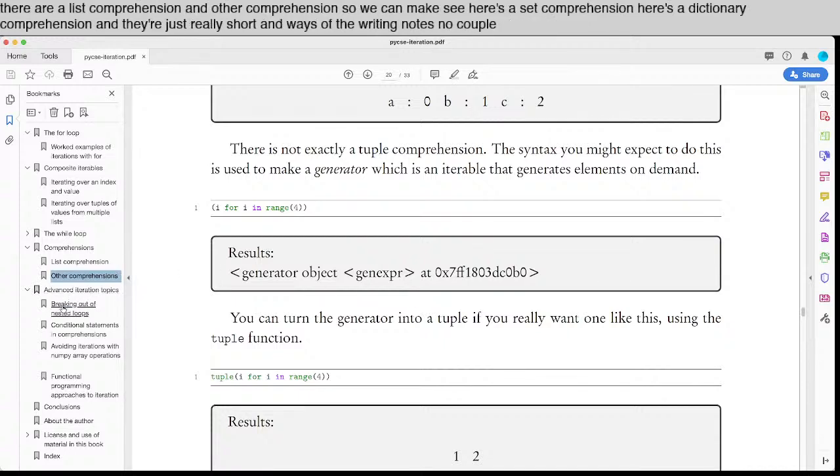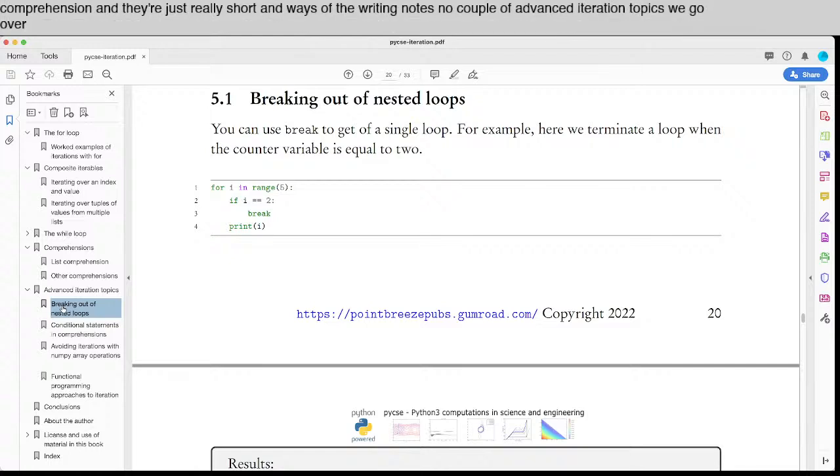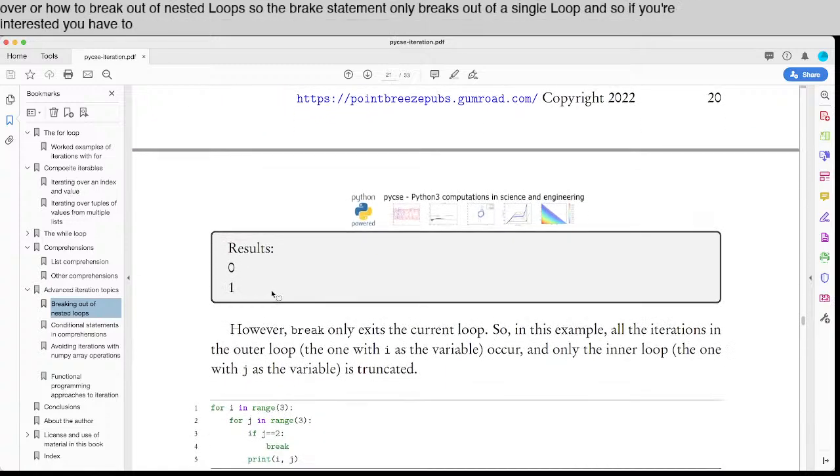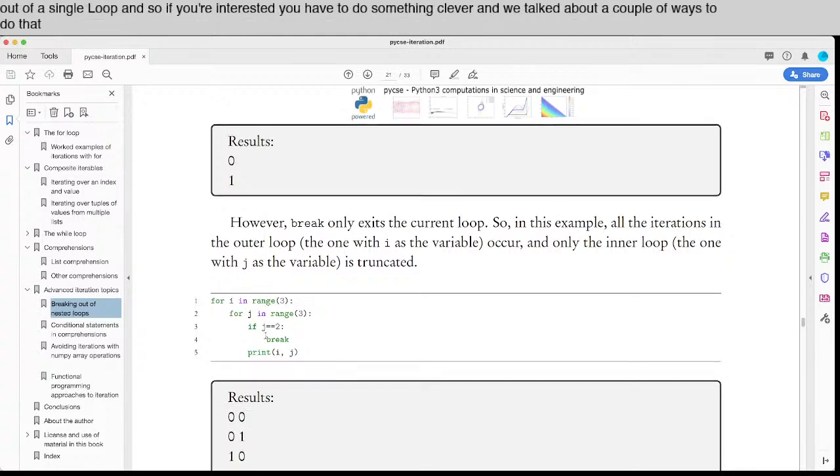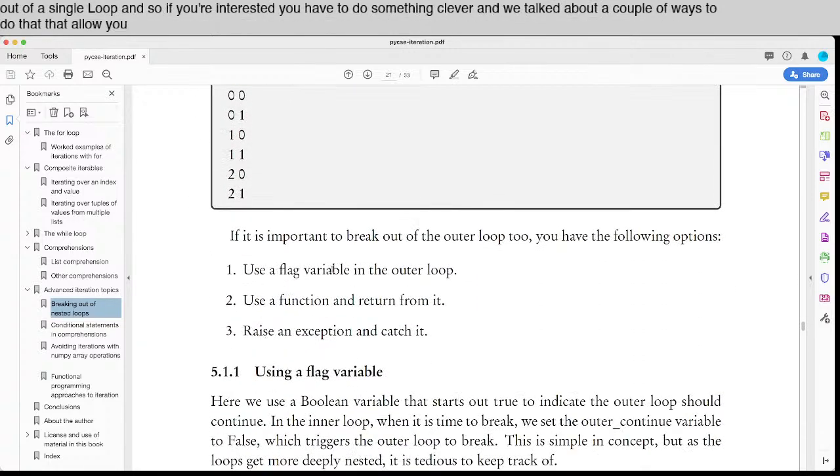Now a couple of advanced iteration topics we go over are how to break out of nested loops. So the break statement only breaks out of a single loop. And so if you're nested, you have to do something clever. And we talk about a couple of ways to do that, that allow you to either use a flag variable or a function and return from it, or you can raise an exception and catch it.